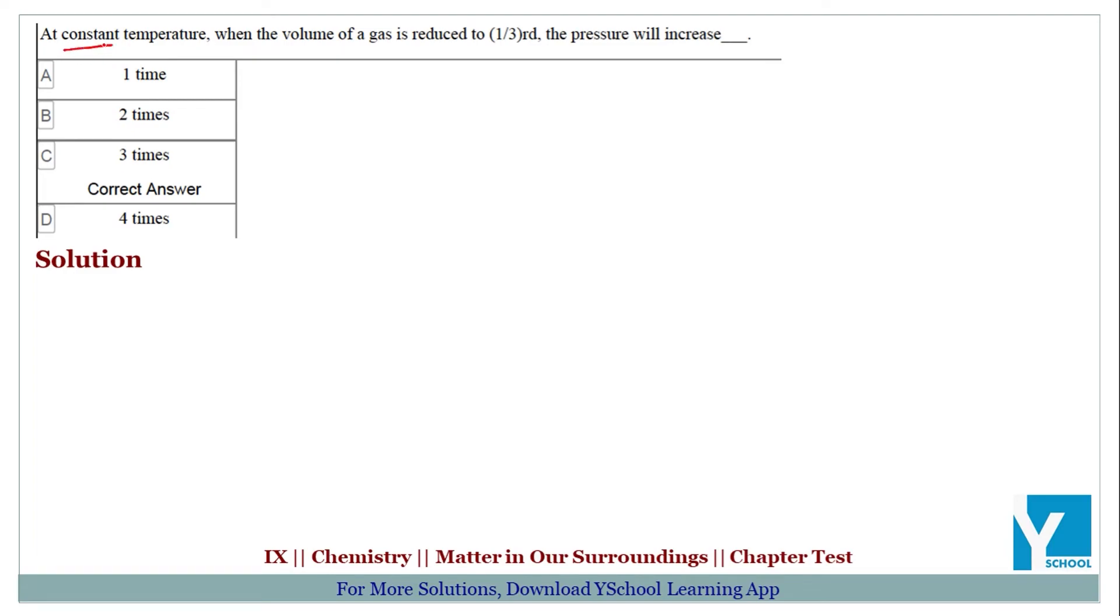Question is, at constant temperature, when volume of gas is reduced to 1/3rd, the pressure will increase. So, temperature constant hai. Volume of gas is reduced to 1/3rd.